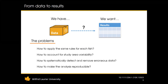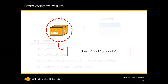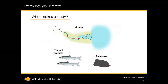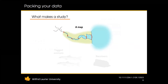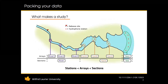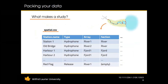Before we can tackle these problems, there's something more central: how do we pack the data we've obtained? To answer this, we ask ourselves what exactly makes a study. We can break it into three pieces: a study area or map, tagged animals, and receivers. The map is essentially a bunch of coordinates — some represent release sites and some represent where we deployed receivers, called stations. Hydrophone stations can be grouped into arrays, which in turn can be grouped into sections. This information can be stored in a table called spatial.csv.